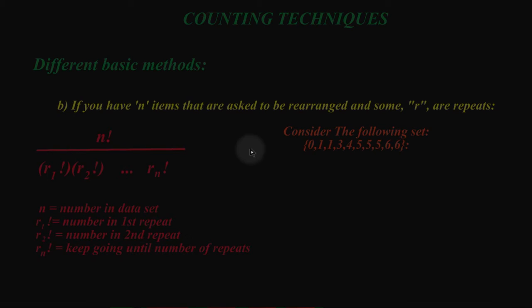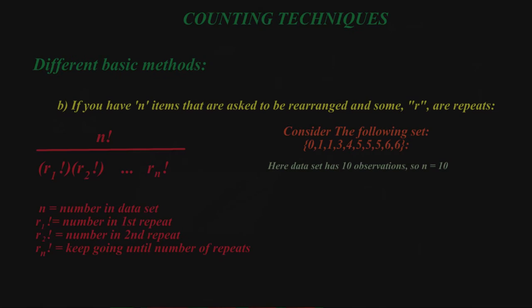Okay, so here we're going to have three different r factorials in the denominator, excluding the one factorials for the single term of zero and one. This data set has ten observations. If you were to add all these up, you'd see that there's ten total, so n is ten, and that's going to be your numerator, n factorial, ten factorial.